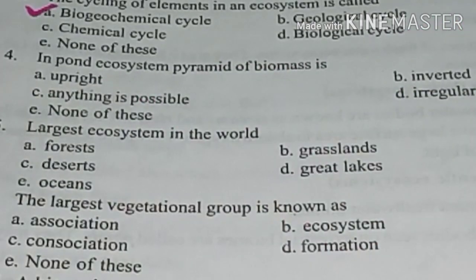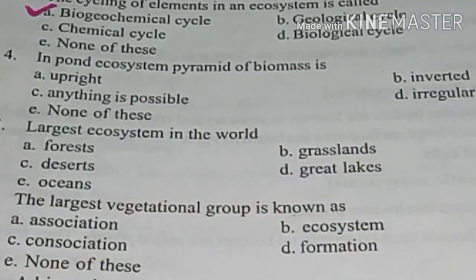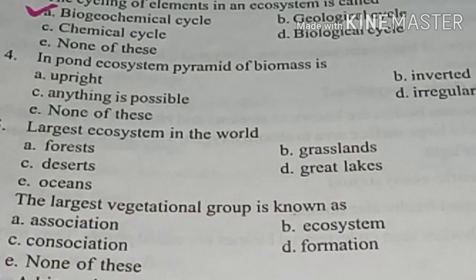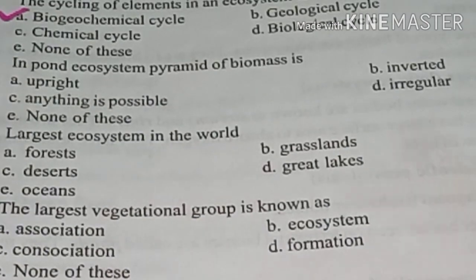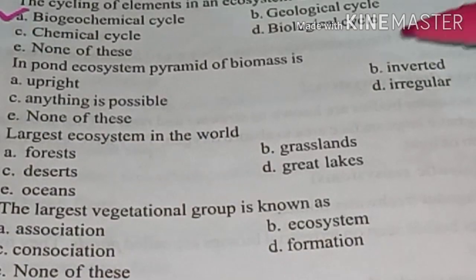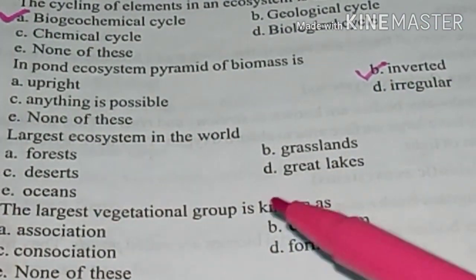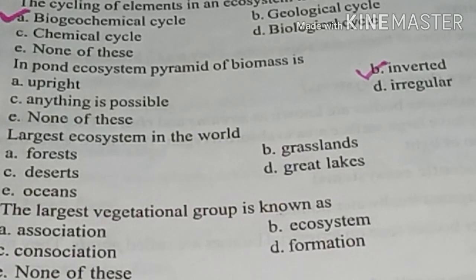In a pond ecosystem, the pyramid of biomass is answer option B: inverted (in water).